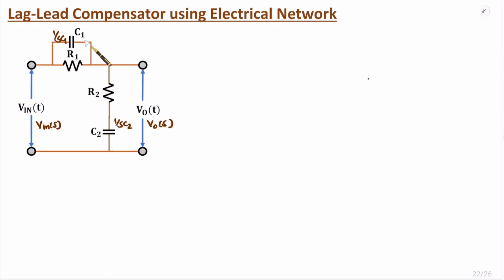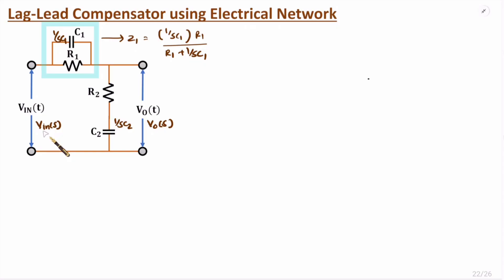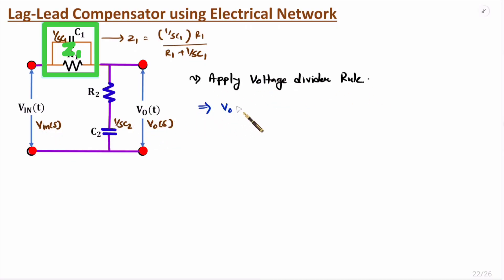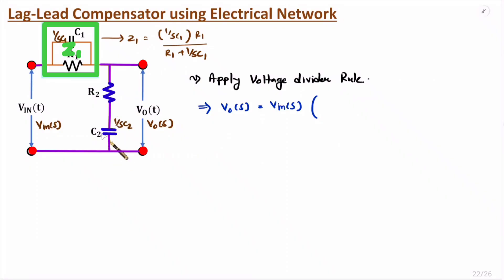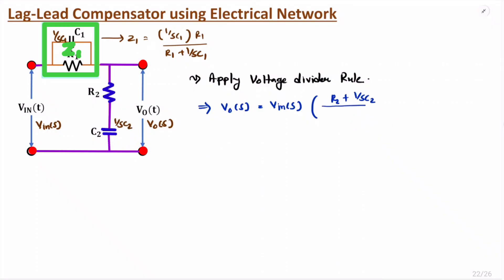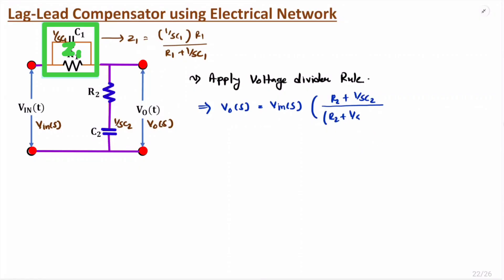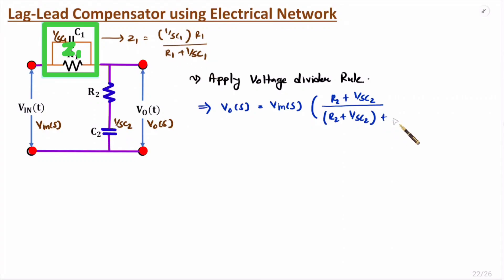R1 and C1 are in parallel. Their equivalent impedance Z1 equals (1/sC1 × R1) divided by (R1 + 1/sC1). Applying the voltage divider rule, the output voltage Vo(s) equals Vin(s) times the impedance (R2 + 1/sC2) divided by (R2 + 1/sC2) plus Z1, where Z1 is R1 times (1/sC1) divided by (R1 + 1/sC1).